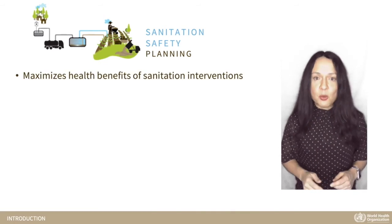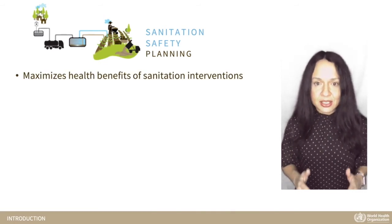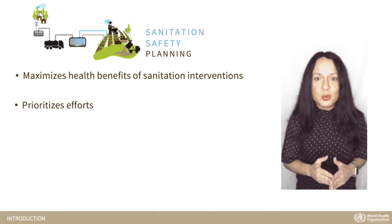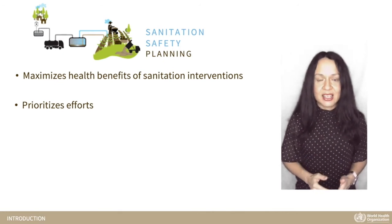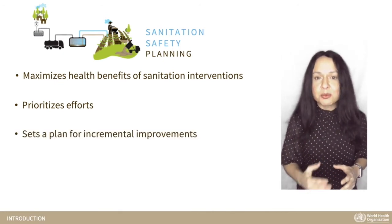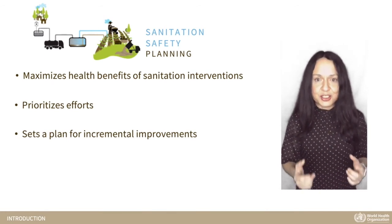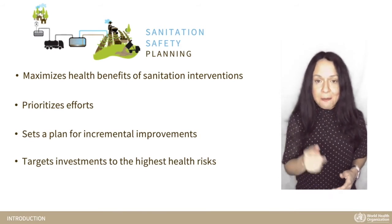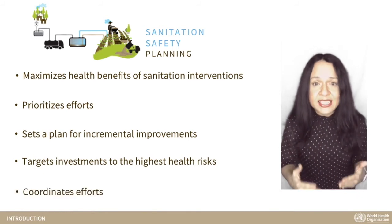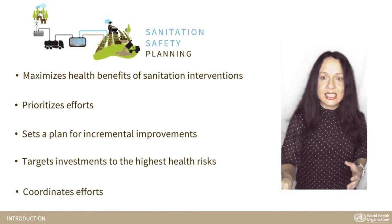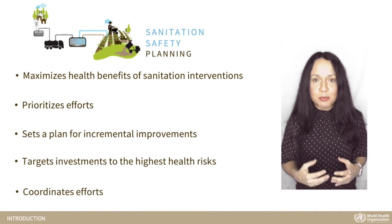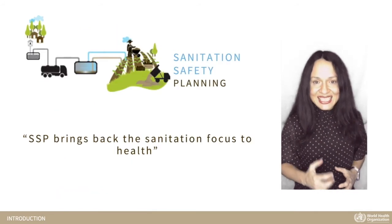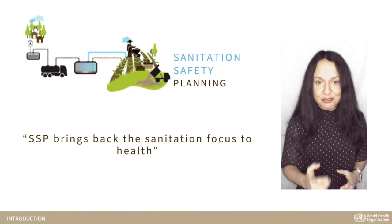SSP helps to maximize health benefits of sanitation interventions. It guides operators to prioritize risk management efforts to where it will have the most impact. It sets a plan for incremental improvements at each step of the sanitation service chain, targets investments to the highest health risk, coordinates efforts of the many stakeholders along the sanitation service chain to maximize health benefits, and stimulates policy dialogue and change. Sanitation Safety Planning brings back the sanitation focus to health.